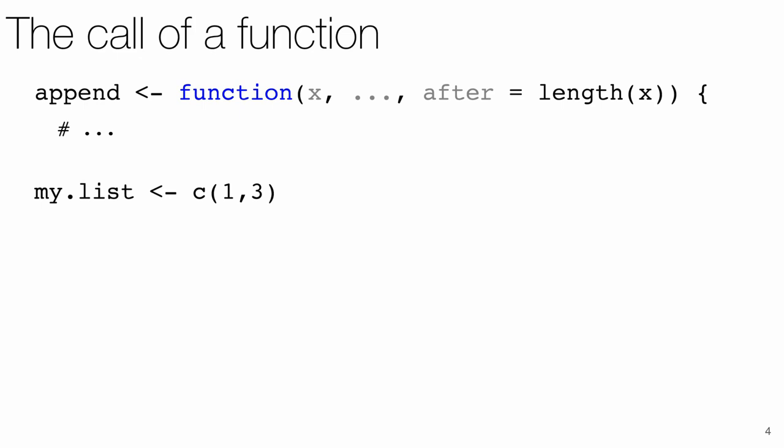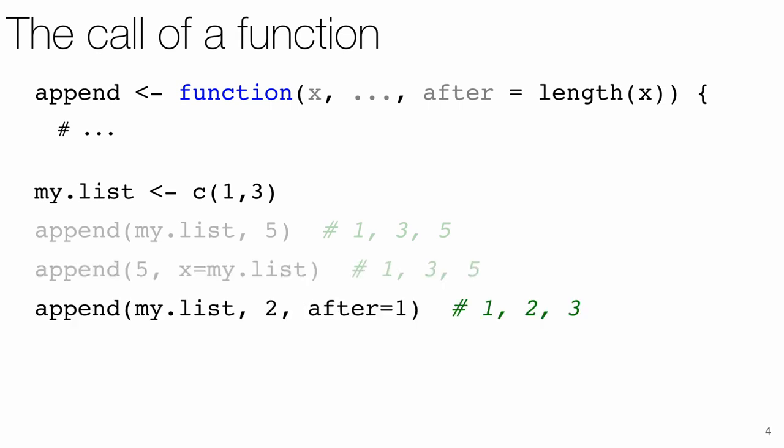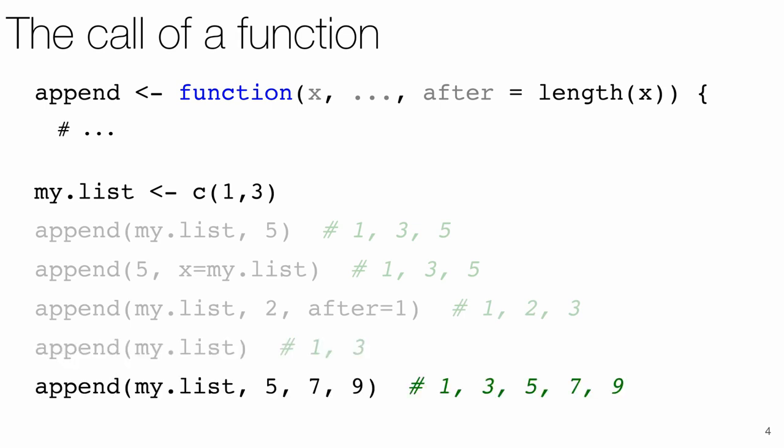Now that we finally have a function created and bound to a name, we would of course like to call it. As you will see, R is very flexible here. There is the straightforward way, and then a number of others. Arguments can be reordered, the defaults changed, the ellipsis passed empty or collecting multiple values.